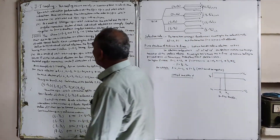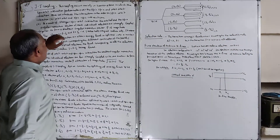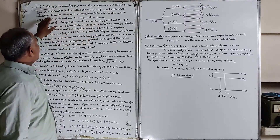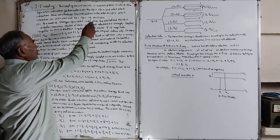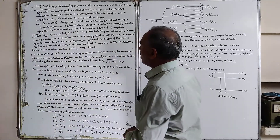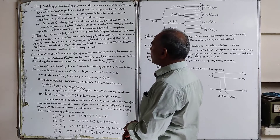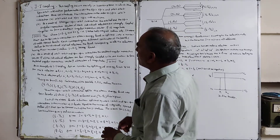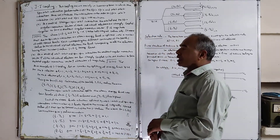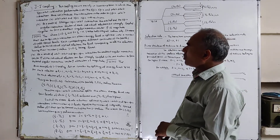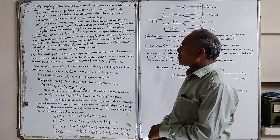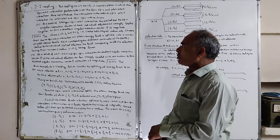Today we are going to discuss JJ coupling. This coupling occurs mainly in heavier atoms in which the spin-orbit interaction predominates over the spin-spin and orbit-orbit interaction. In the first lecture we discussed three types: spin-orbit, spin-spin and orbit-orbit interaction. In this case, we introduce the interactions in order: spin-orbit interaction first, then orbit-orbit and spin-spin interaction.